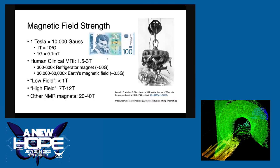We measure modern MRIs in Tesla, which equals 10,000 Gauss — quite a bit stronger. The average junkyard magnet is about one Tesla — hundreds of times stronger than your refrigerator magnet and tens of thousands of times the Earth's magnetic field. Low field is generally less than one Tesla, and high field is 7 to 12 Tesla for human imaging. The most common ones are 1.5 or 3 Tesla. Other research NMR magnets can go from 20 to 40 Tesla, with the most powerful at 45 Tesla — but those are not for humans.